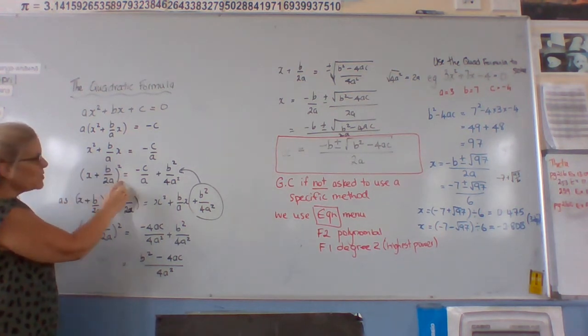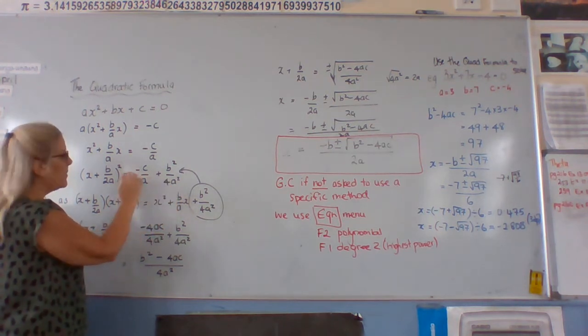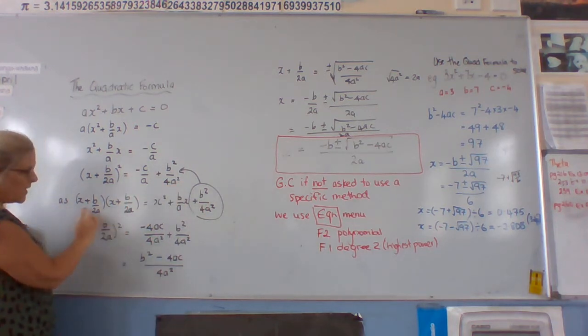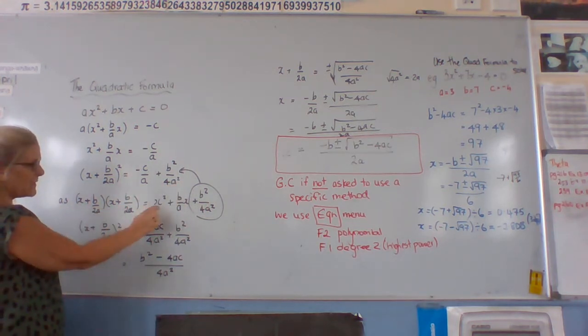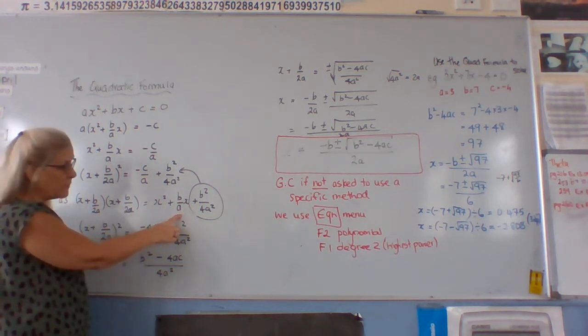So when we multiply that back out, we introduce an extra b squared over 4a squared, which we have to add. So this times this, x times x is x squared, these two added together, that's a half of that, and a half of that makes a whole, so no 2 anymore.